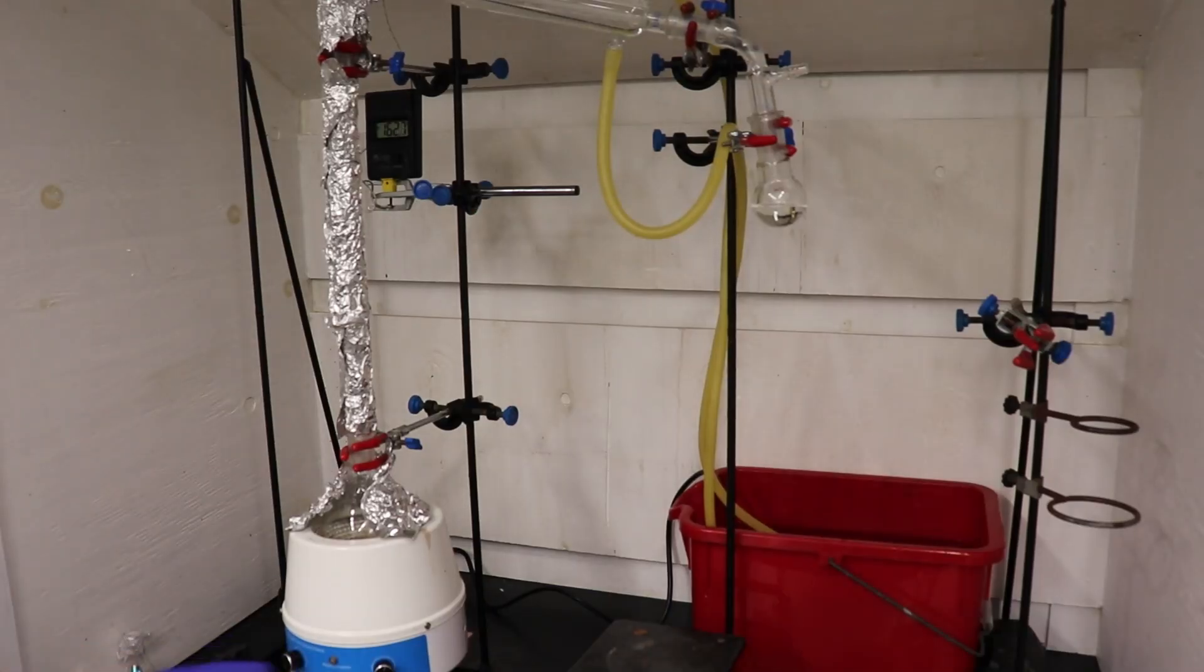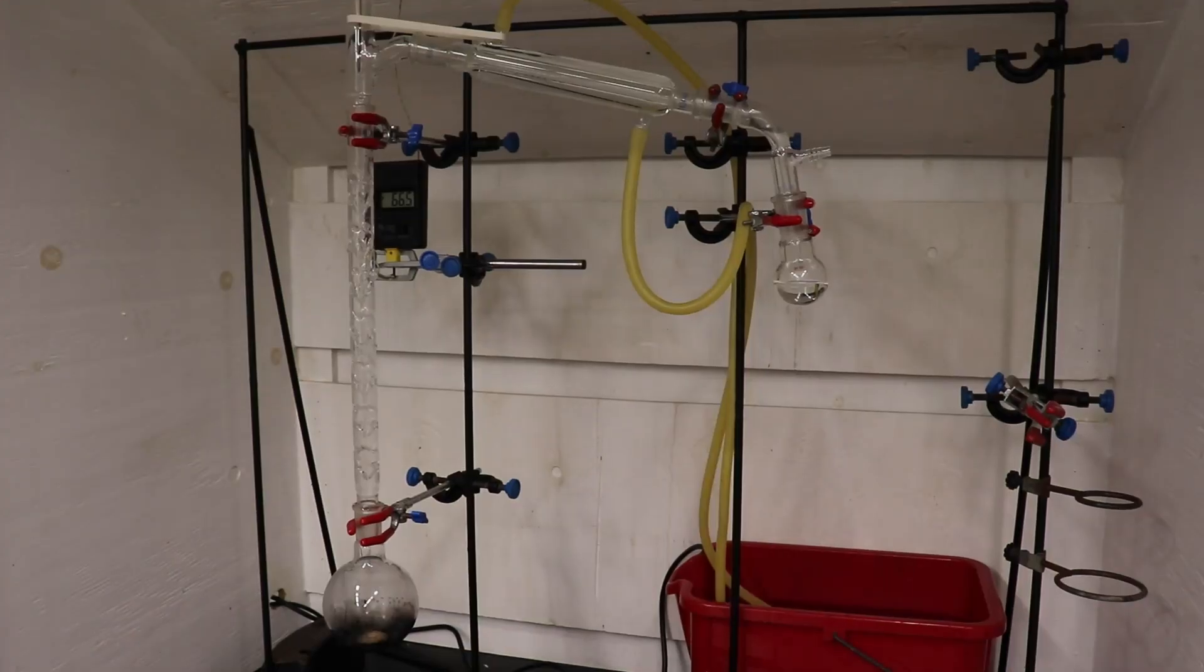Eventually the rate of distillation slowed, and the stillhead temperature began dropping. This observation shows that I've collected as much ethyl-2-bromopropionate as I could, so I turn off the heat and stop the distillation.